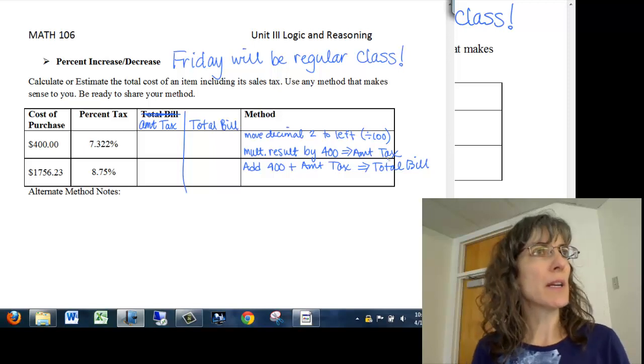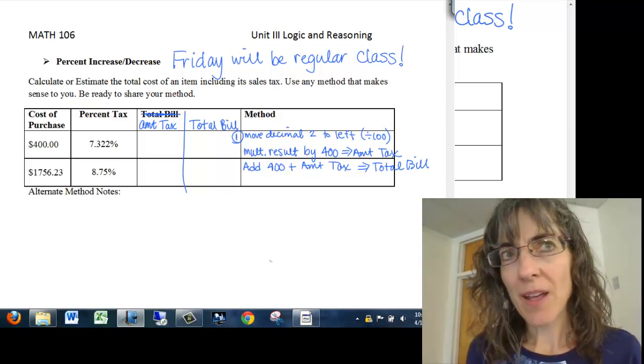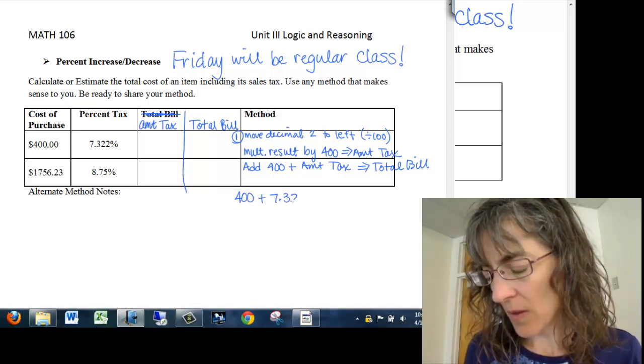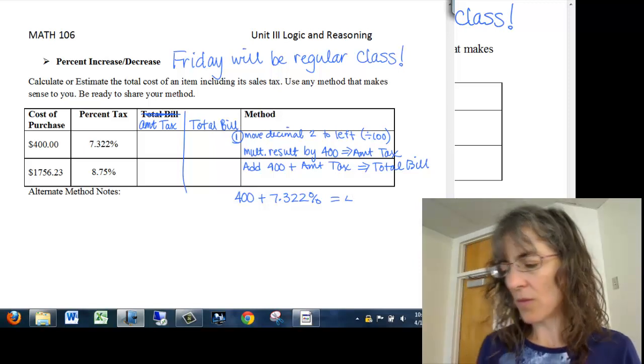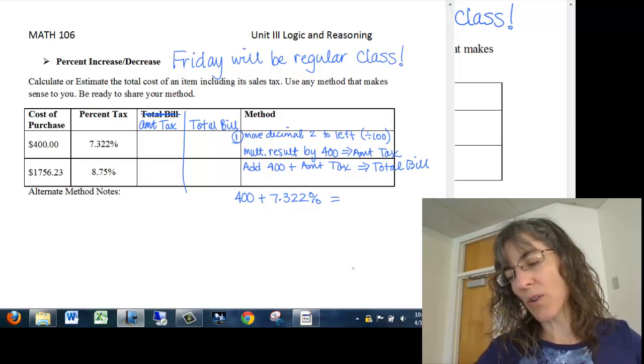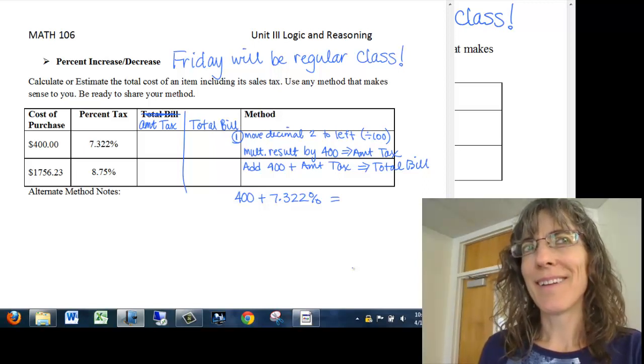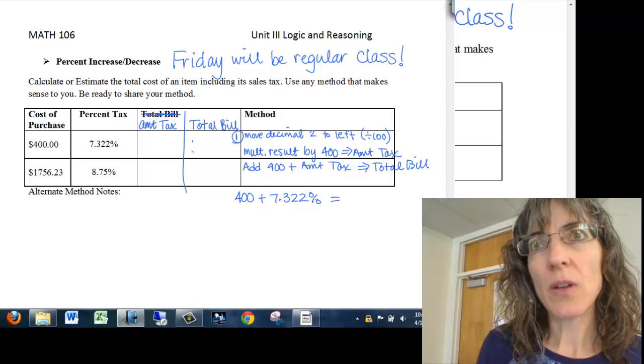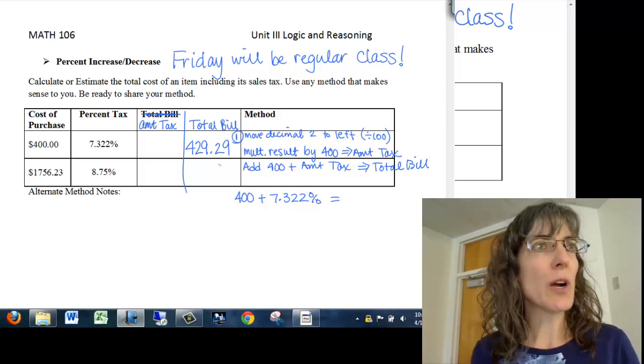Did anyone do that differently? So that we'll call Method 1. Did everybody use Method 1 exactly as it's shown? What did you do, Jermaine? I just added them. Added what? $400 plus 7.322 percent. So what did you end up with? 429.28. That looks to me like it comes out to 407.322 if you add those. So that's not really what you did. Look back, see if you can see.